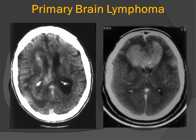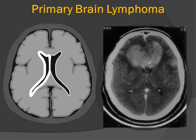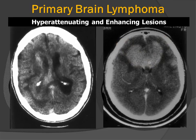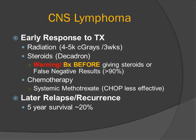Again, primary CNS lymphoma shows abnormal hyperattenuation surrounding the ventricle, and the classic butterfly appearance for a lesion involving the corpus callosum. The last comment about CNS lymphoma is that it typically has a very early and very good response to therapy — a good response to radiation, steroids, and chemotherapy. Because of this very early response, we want to remember that if the patient is going to need tissue confirmation, a biopsy should be performed prior to giving therapy. Otherwise, there is a very high false negative rate for a biopsy in treated or partially treated primary CNS lymphoma. For this reason, it is sometimes called a ghost tumor.